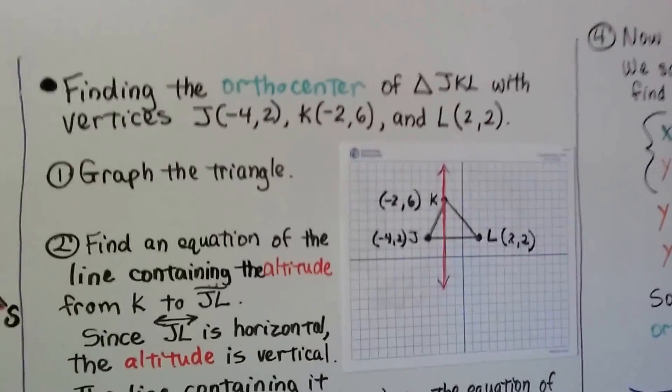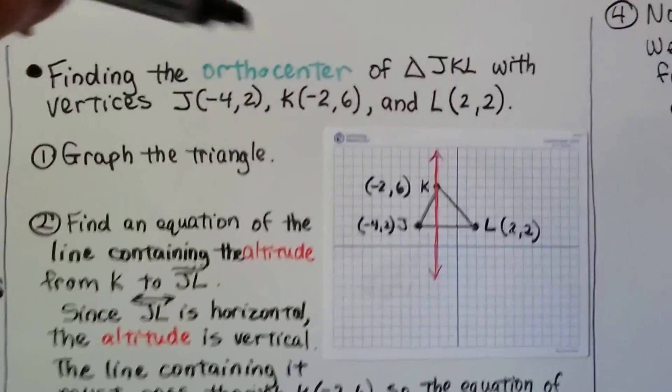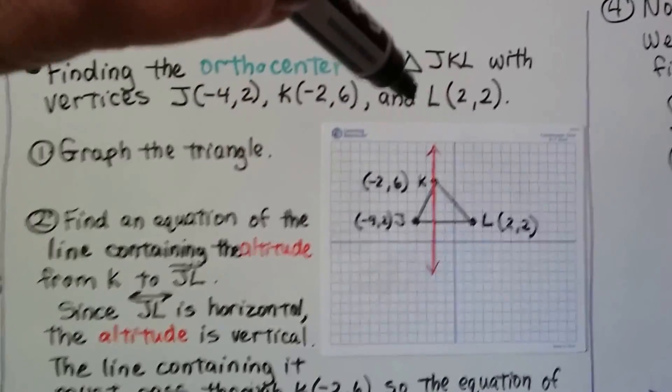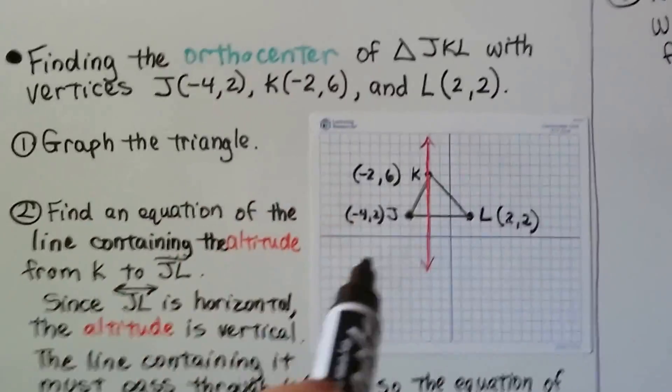Finding the orthocenter of triangle JKL with vertices J is at negative 4, 2. K is at negative 2, 6. And L is at 2, 2. We graph the triangle according to those coordinates.